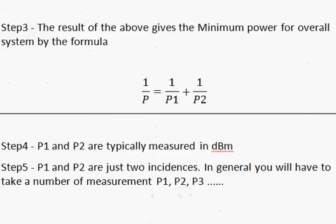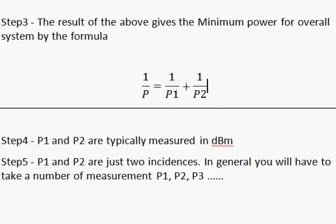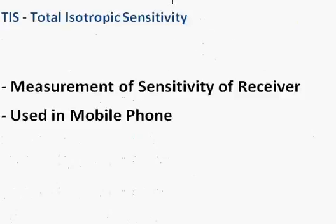You can extend this formula for more measurements P1, P2, up to Pn, using the same formula: 1/P = 1/P1 + 1/P2 + 1/P3 + ... + 1/Pn. There will also be a correction factor that takes into account the losses between the transmitter and receiver and the setup factors. I hope this talk gives you a broad idea about what total isotropic sensitivity is about.